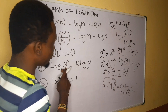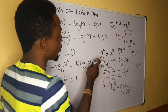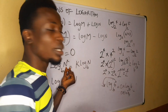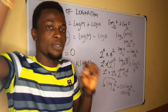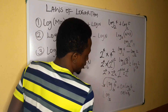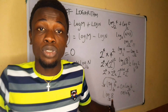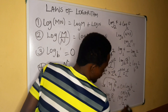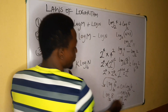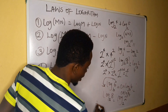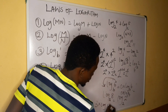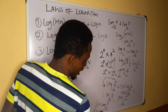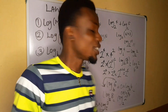The next law states that log of (a raised to power k) base b equals k times log a base b. This means if you can express the argument as a power, you bring the exponent forward to simplify. For example, log base two of eight — since two raised to power three is eight, we write log base two of (2³), then bring the three forward: 3 × log base two of two. Since log base two of two equals one, this simplifies to 3 × 1 = 3.